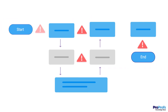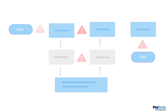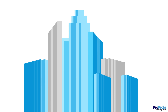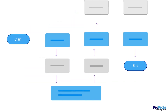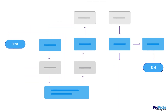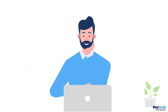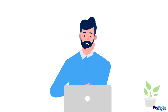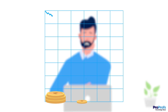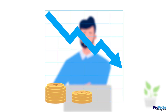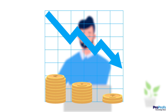A broken internal process leads to inefficient business operations. As a business grows, processes are bound to become more complex. However, when processes aren't managed well, confusion and chaos take over, leading to a 20-30% loss in revenue every year.